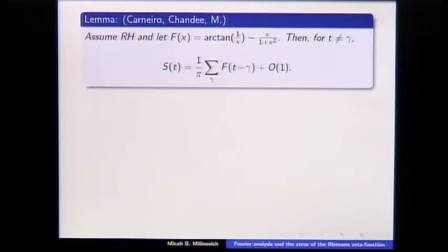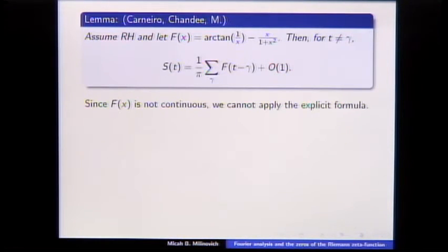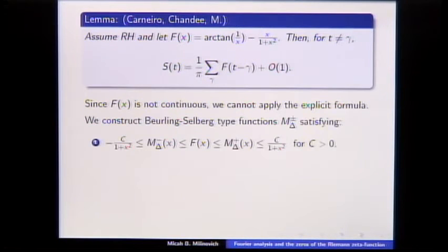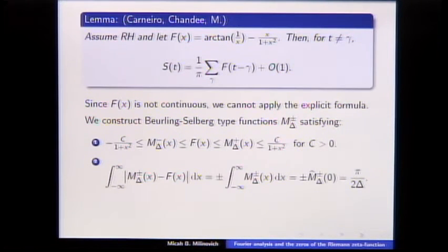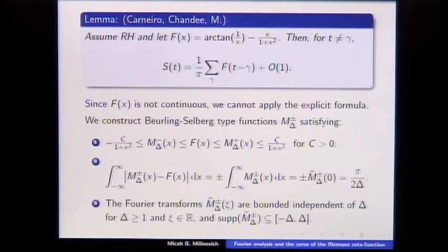We can write S(t) as a sum over the zeros of the zeta function of something with a discontinuity of size one — it jumps by one at the origin — exactly what we want. But it's not analytic in a strip, so you can't use the explicit formula directly. You have to find something always bigger or always smaller than this arctangent function and put that in instead. So we play the Beurling–Selberg game: construct functions that are always bigger or always smaller, decay rapidly enough for the explicit formula, and minimize the L1 distance. Since F is odd, that's the same as saying the Fourier transform at zero is small, and we want the Fourier transforms supported in minus delta to delta.